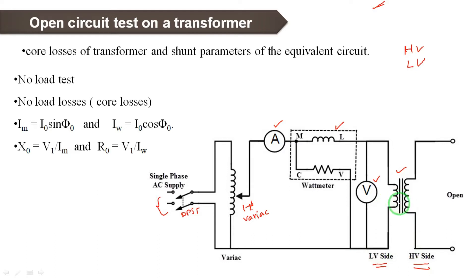We check the performance and output performance, and we calculate the efficiency. We calculate the variation of input and output, and observe the efficiency. We will test the present transformer — conducting the open circuit test and testing the performance.